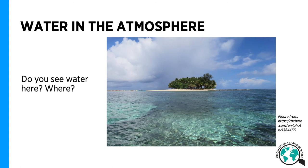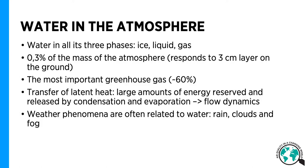Water is everywhere in the atmosphere. You see it in the clouds as cloud droplets and ice crystals. Rain affects your everyday life. You see water in seas and lakes, but also vegetation consists largely of water and is part of the circulation of water. What you don't see is the water vapor that is present everywhere in the atmosphere. So water is in the atmosphere in all of its three phases: ice, liquid, and gas.